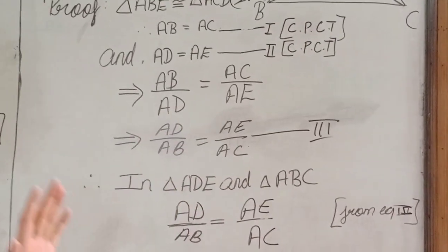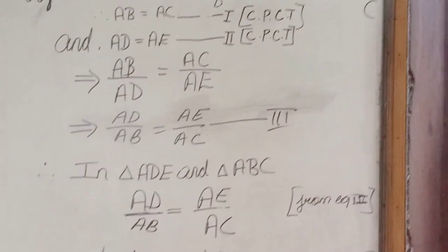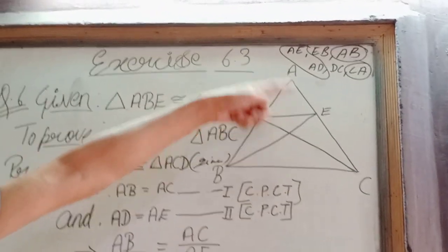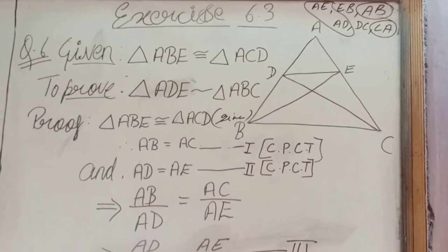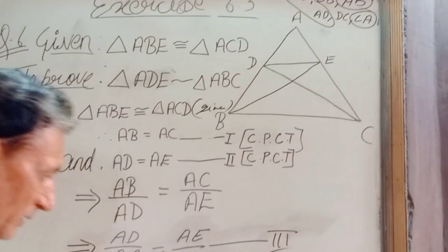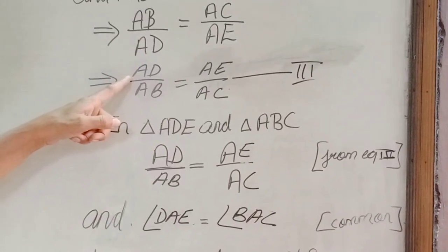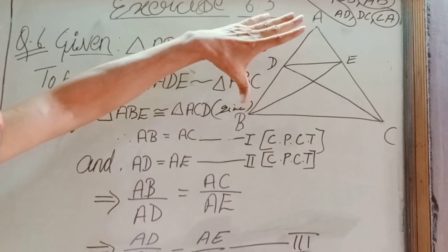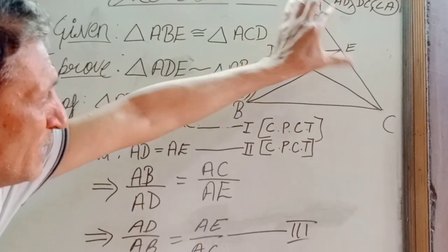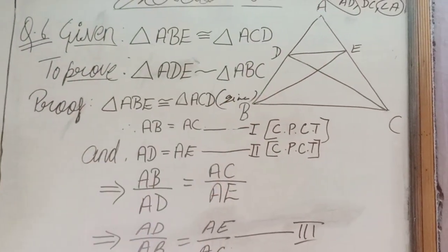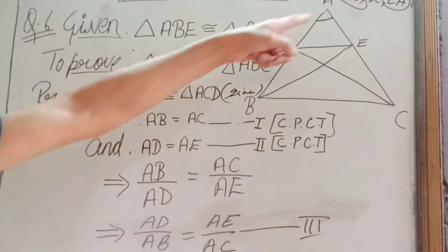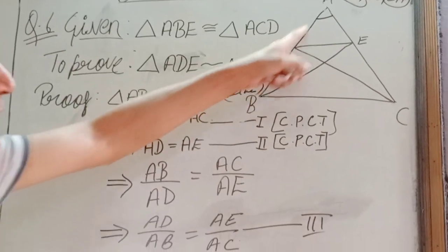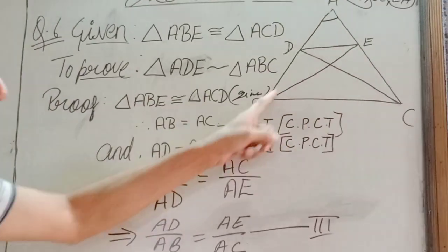Let's leave it here for a while and take up triangle ADE and triangle ABC. In these two triangles, from here we have AD upon AB is equal to AE upon AC. And angle A is common in both DAE as well as DAC.